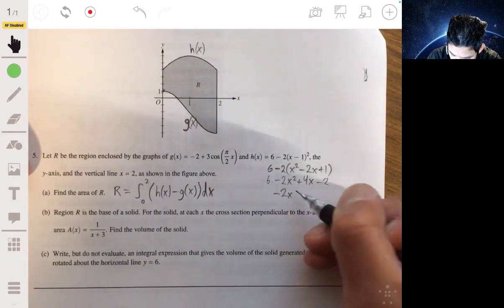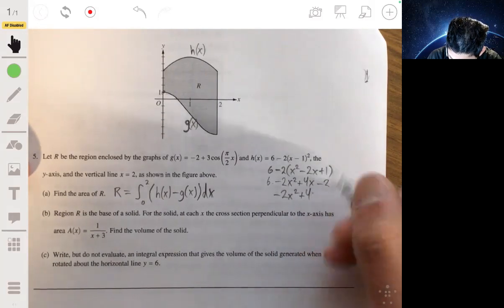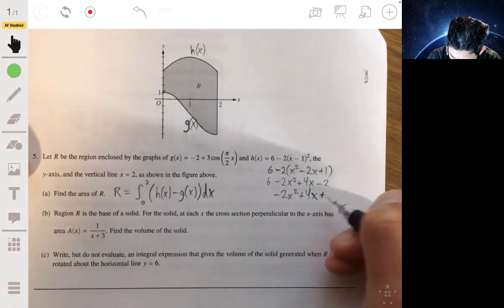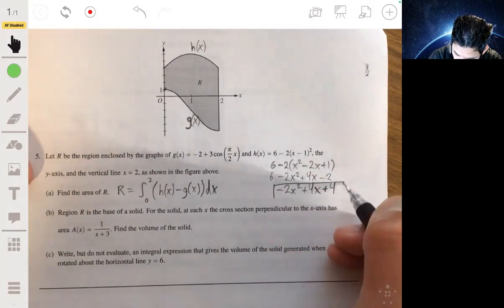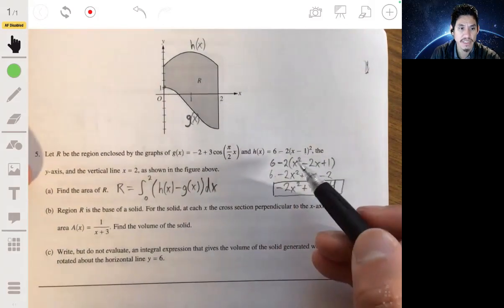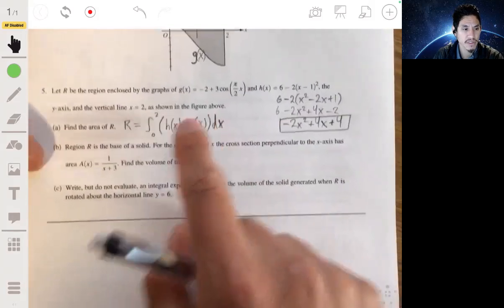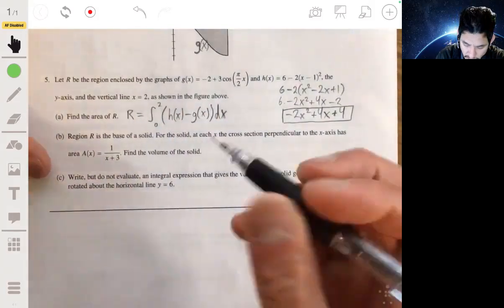So then it'll be minus 2x² plus 4x plus 4, and this will be the equation for h(x). Let me go through this down here to show the work more neatly.